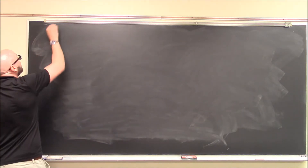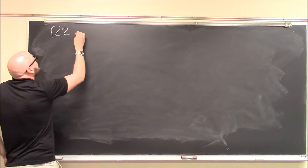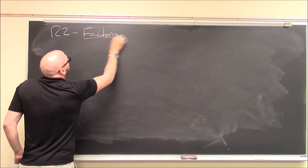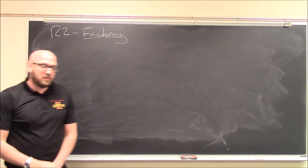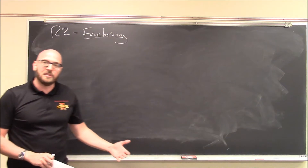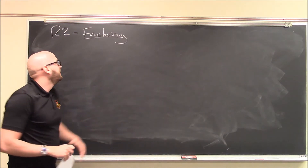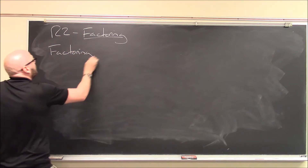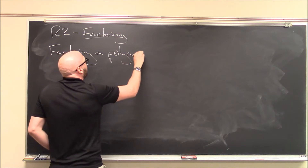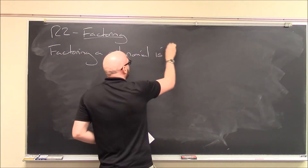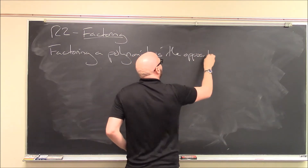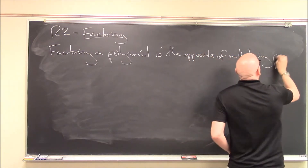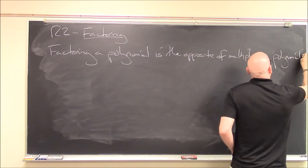Chapter R2 — R for review — is factoring. At the end of R1, we reviewed how to multiply two polynomials together. Factoring is the opposite of that. Factoring a polynomial is the opposite of multiplying polynomials together.